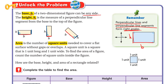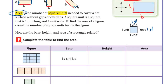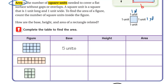So now we know the base and the height. The area is the number of square units needed to cover a flat surface without gaps or overlaps. A square unit is a square that is one unit long and one unit wide. To find the area of a figure, count the number of square units inside the figure. The unit may be centimeters — one centimeter by one centimeter is called a square centimeter. One meter by one meter is a square meter, one yard by one yard is a square yard, and so on.